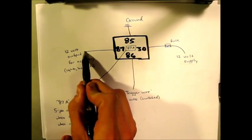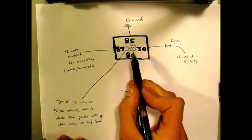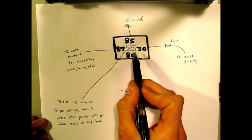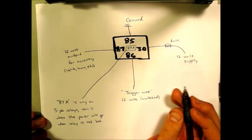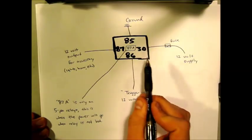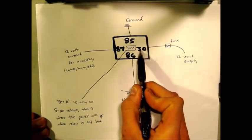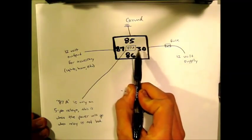Now the 87a - a five prong relay which isn't very common, but if you do need it or want to use one - this is basically where the power from the 30 terminal is going to go until you switch it on. Then it will transfer to the 87 and take it off the 87a.